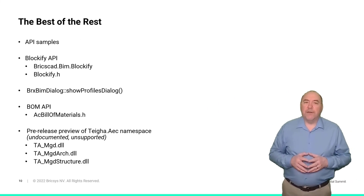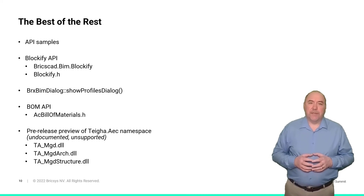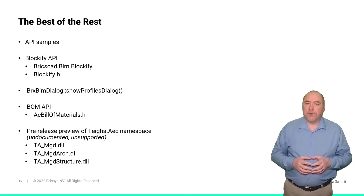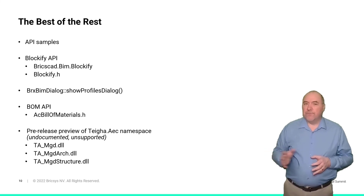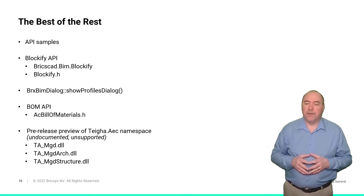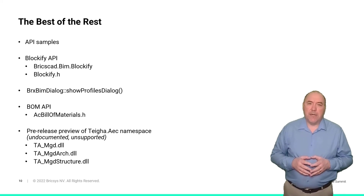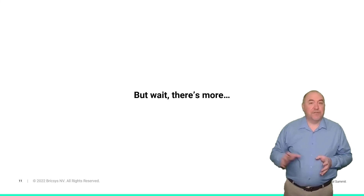I'd like to mention just a few more items of interest in version 23. Every BricsCAD installation includes a collection of API samples installed in the API subfolder, and these samples have been updated in version 23 to demonstrate many of the new and changed APIs. We've made some improvements to the Blockify API, which exposes this very powerful and popular functionality to plugins. We added a new Bill of Materials API. And you can see a hint of things to come in the tiga.aec namespace.